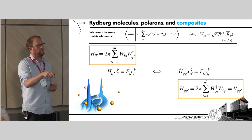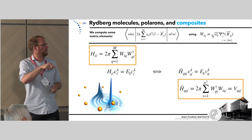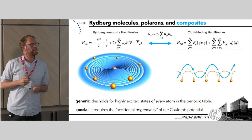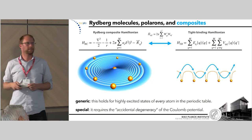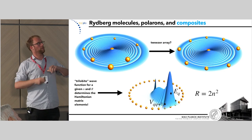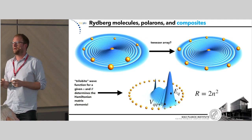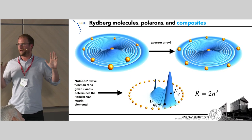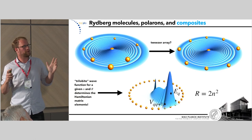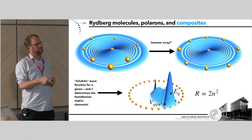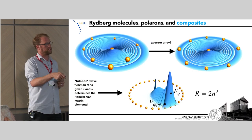This is more than just math: if you look at what creates these hopping terms, it's again the trilobite molecules. To compute V_QQ', you simply take the trilobite going to atom Q and figure out its amplitude at atom Q'. Just by looking at these trilobite functions you can see what the matrix elements are going to be — large or small, whether there are atoms to which you don't hop at all. This means we can really think about designing a Rydberg composite by placing ground state atoms in the correct positions to realize whatever tight-binding Hamiltonian we're interested in.